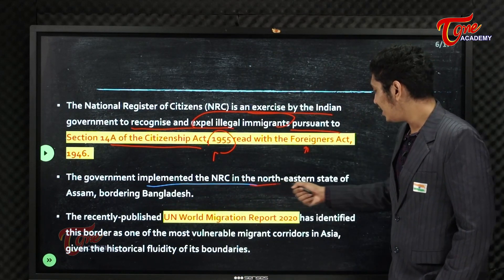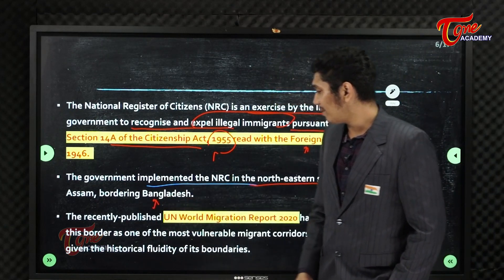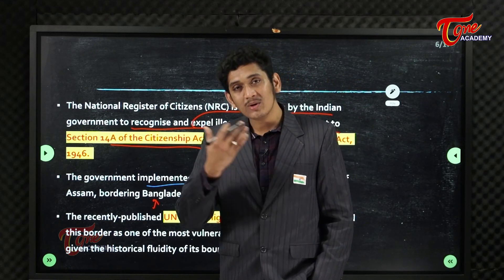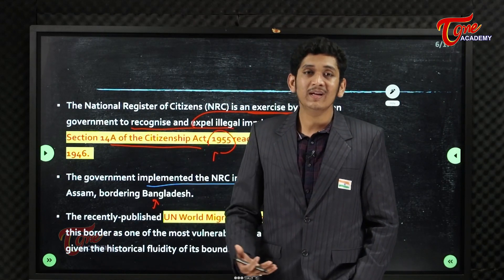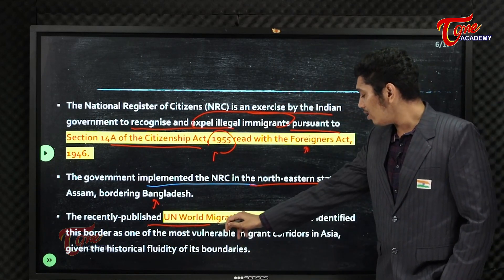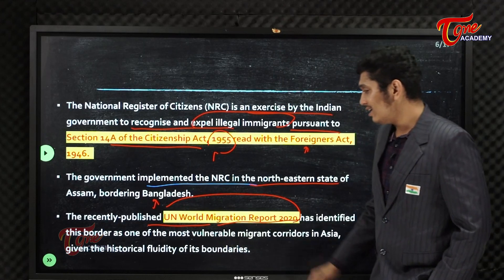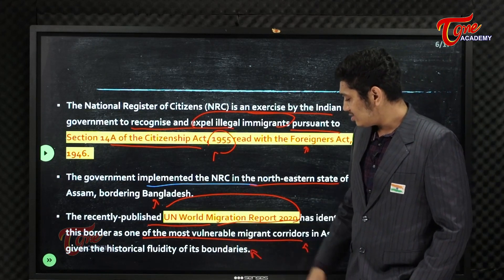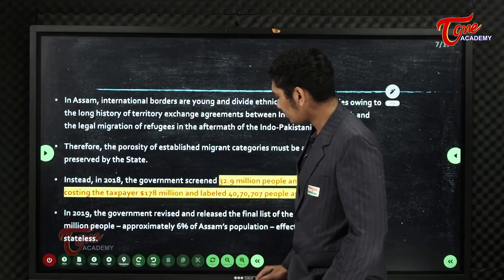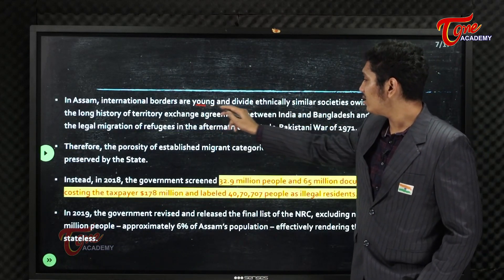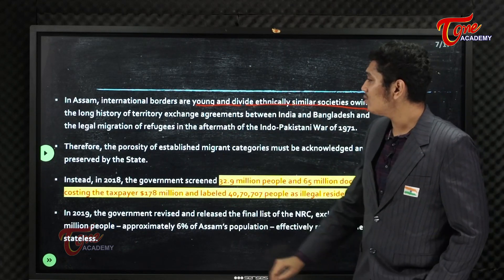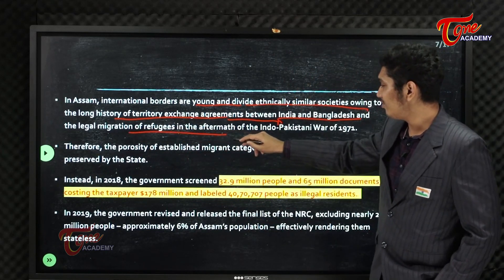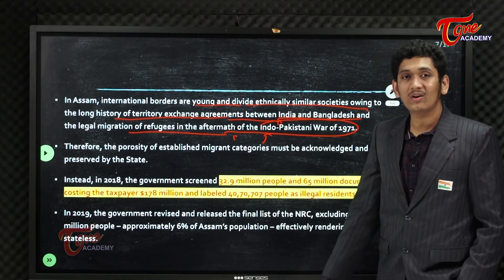The government implemented the NRC in the northeastern state of Assam, bordering Bangladesh. Bangladesh and India are ethnically and historically connected for a long time. The UN World Migration Report 2020 has identified this as one of the most vulnerable migrant corridors in Asia, given the historical fluidity between boundaries. International borders in Assam are relatively young and divide ethnically similar societies, owing to the long history of territory exchange agreements between India and Bangladesh and legal migration of refugees in the aftermath of the Indo-Pakistan War of 1971.